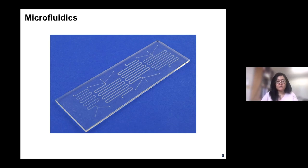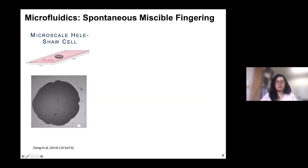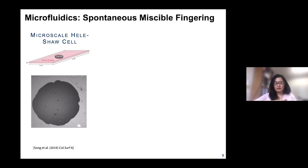One very useful approach is the use of microfluidics. Here I have an example of a microfluidic device — actually four different devices — where each one has etched channels that are sub-millimeter in dimension. We can flow in whatever fluids we're interested in and observe this under a microscope to visualize in real time at the right length scales — sub-millimeter and micrometer — what's going on within these complicated systems.